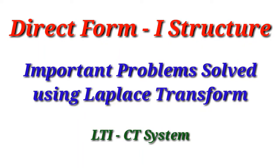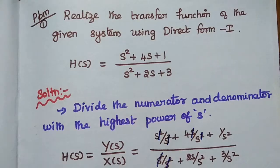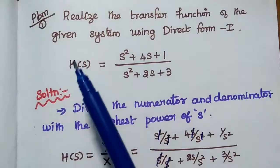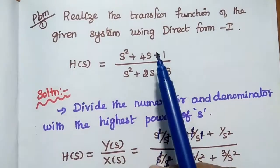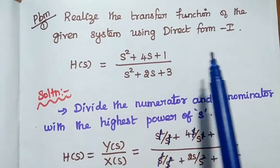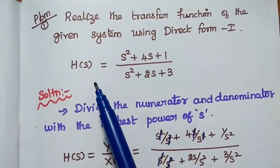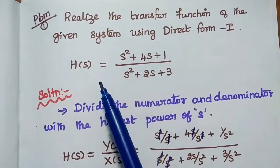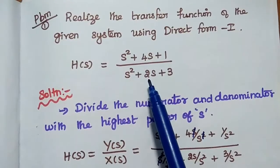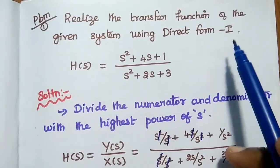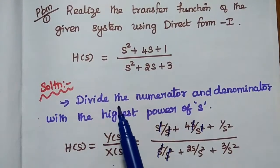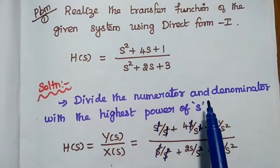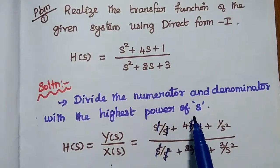Dear students, now we are going to solve important problems in direct form 1 structure using Laplace transform. The first problem is to realize the transfer function of the given system using direct form 1 method. The system is described by its transfer function H of S. The first step is to divide the numerator and denominator with the highest power of S.